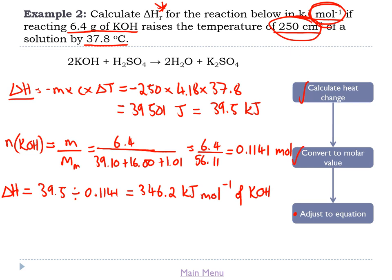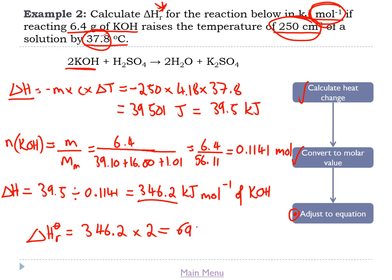Now we need to adjust for the equation, which has two moles of KOH. For one mole of the overall reaction we need to double this value: ΔHᴿ = 346.2 × 2 = 692.4 kJ/mol, which rounds to 692 kJ/mol to three significant figures.